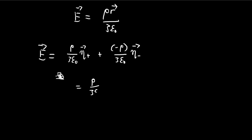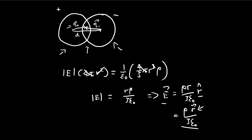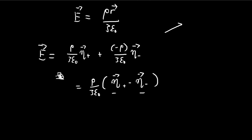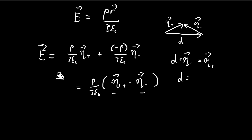So we can actually group these terms up to get something like this. Note that both of these etas are just arbitrary vectors, as long as they point from the center to the overlapping area. So in this case you can see that we have eta plus minus eta minus, and that actually equals d — because if you check out the vectors here, you get a vector d defined like this. I've defined my eta plus and eta minus like this, so you see that d plus eta minus equals eta plus, meaning d equals eta plus minus eta minus. So d is going to be the vector pointing from the center of the positive sphere to the center of the negative sphere.